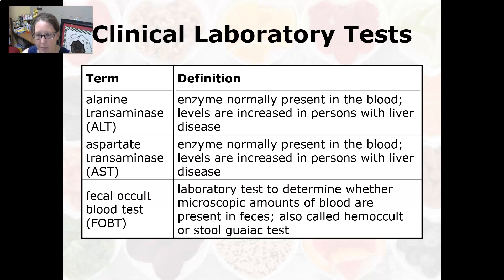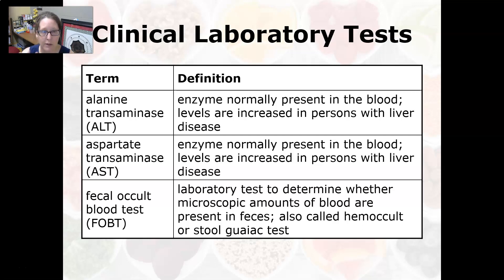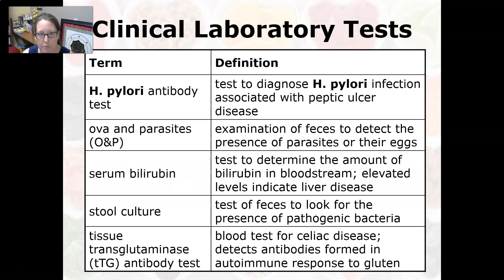It is also called a Hemoccult or a stool WHACK test — that's also the reagent that's used. This is good to detect chronic inflammation of the GI tract, especially the colon and intestines, in stool that looks normal but might contain trace amounts of blood.